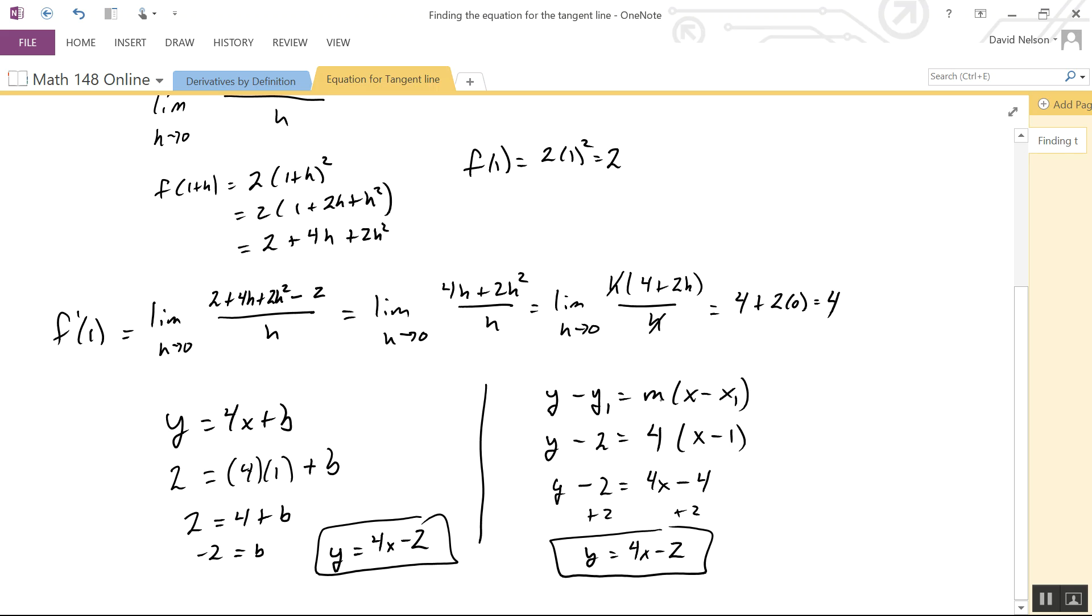That gives you something you can solve to find b. The other way uses the point-slope formula - you just plug in the values and simplify. But it's another formula to remember. Use whichever way you find easiest. Either way, we get the same answer: y = 4x - 2.